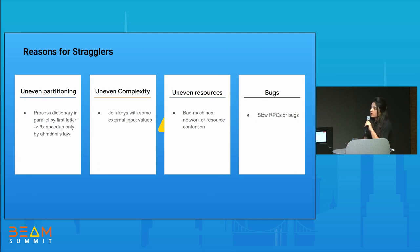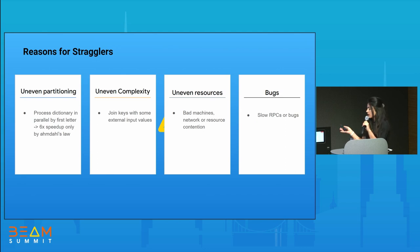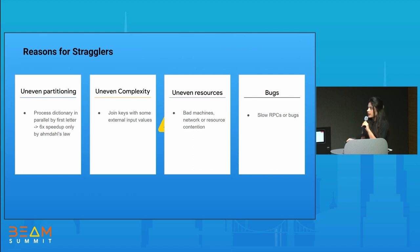The reasons for stragglers include uneven partitioning — where there are more values associated with a certain key, which becomes a possible cause. For example, if you are processing the English dictionary with 26 workers where each worker processes words starting with a certain letter, this becomes a bottleneck because almost every sixth word starts with T. Your pipeline won't scale more than six times, and the worker processing the letter T will definitely become a bottleneck.